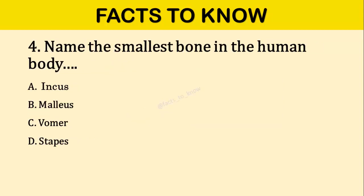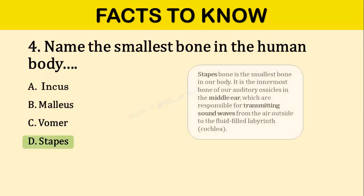Question number four: Name the smallest bone in the human body. The correct answer is option D: Stapes. Stapes bone is the smallest bone in our body. It is the innermost bone of our auditory ossicles in the middle ear.